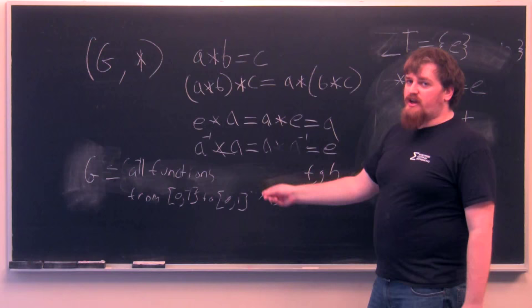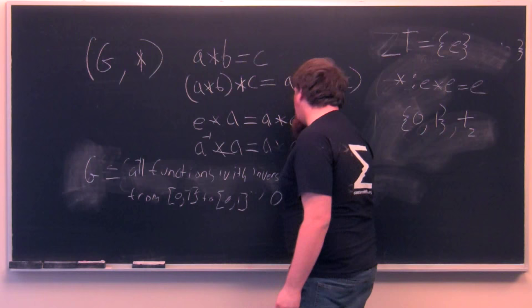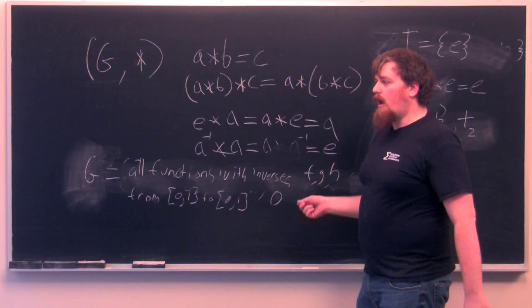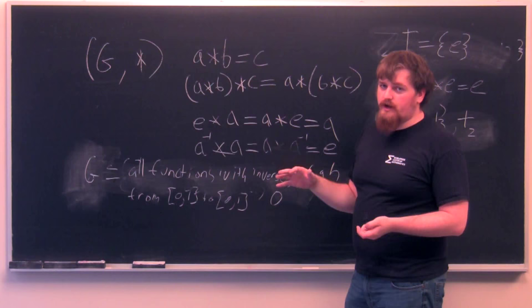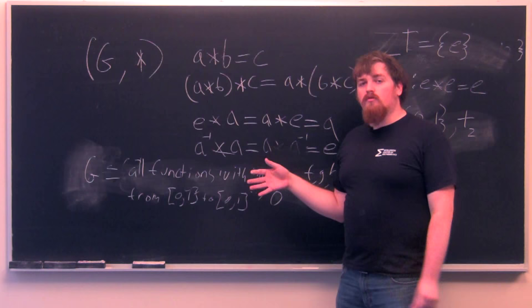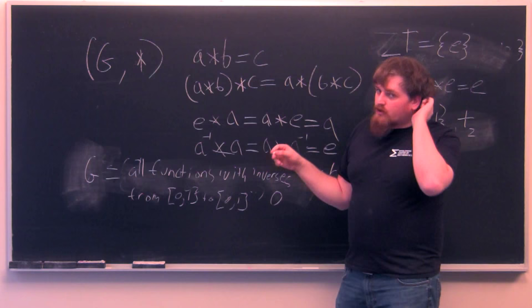This has to be all functions with inverses from 0, 1 to 0, 1. And this means that constant functions are out because those don't have inverse. In fact, any function which is not both 1 to 1 in that it sends every element to only one element, and onto in the sense that it sends an element to every element in 0, 1, only those functions, which we call bijections or invertible functions, can be in G. So G has these properties now, but we can see that G is not going to be abelian or commutative.